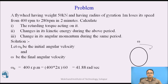Let us consider the problem. A flywheel having weight 50 kN and having radius of gyration 1 meter loses its speed from 400 rpm to 280 rpm in 2 minutes. We are supposed to calculate the retarding torque acting on it, the change in its kinetic energy during the above period, and the change in its angular momentum during the same period.